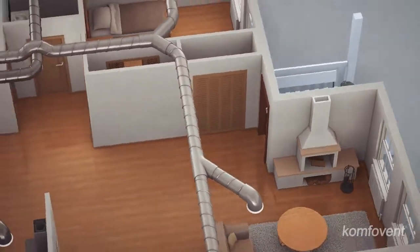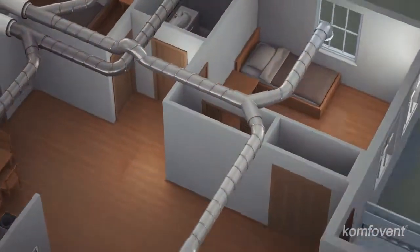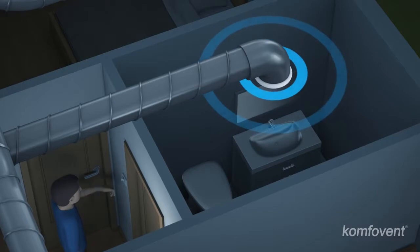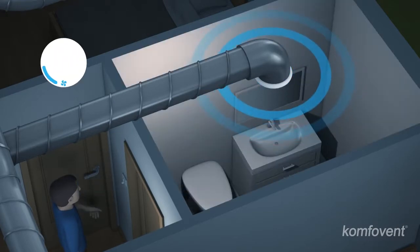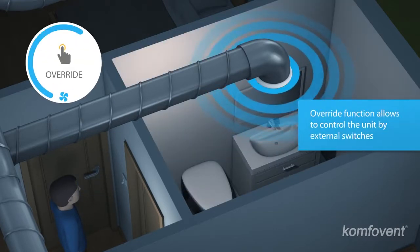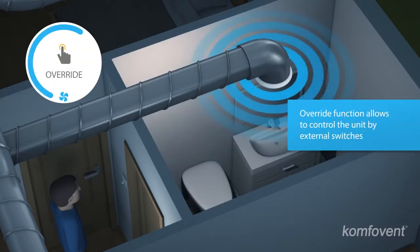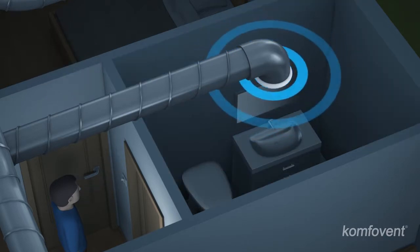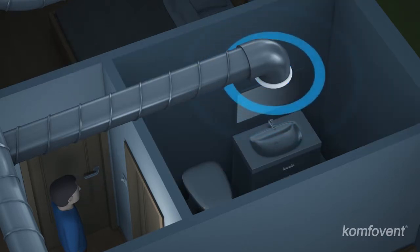Special ventilation modes can be adapted to your other daily needs. For example, when you switch on the light in the bathroom, a signal is sent to the handling unit. To quickly vent the premises, automation increases the intensity of ventilation. When you turn off the switch, the intensity of ventilation returns back to the previous level.